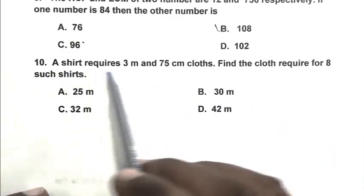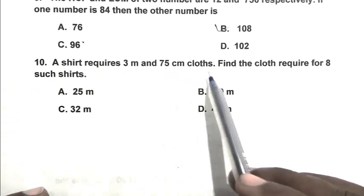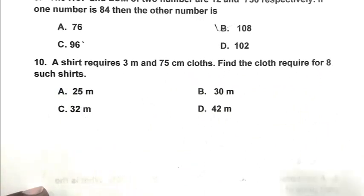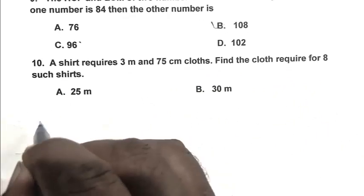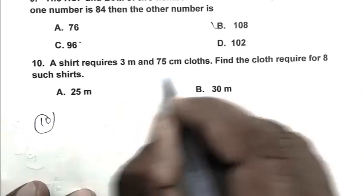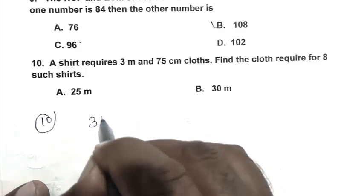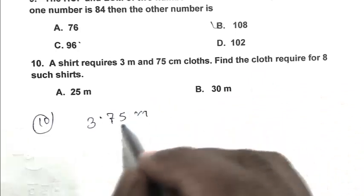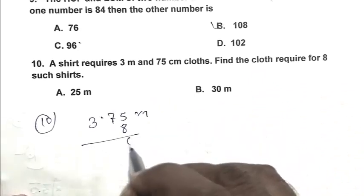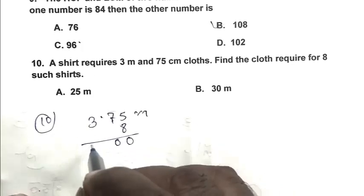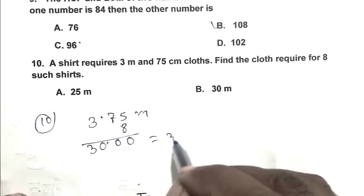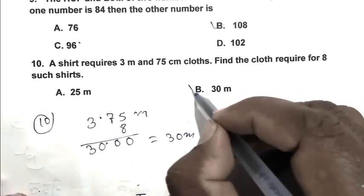Question number ten: a shirt requires 3 meters 75 centimeters of cloth — find the cloth required for eight such shirts. We write 3 meters 75 centimeters as 3.75 meters, then multiply by 8, which gives 30 meters. B is the right answer.